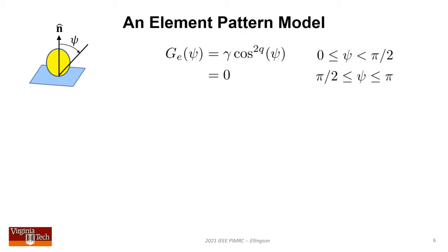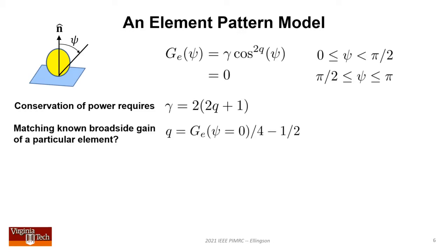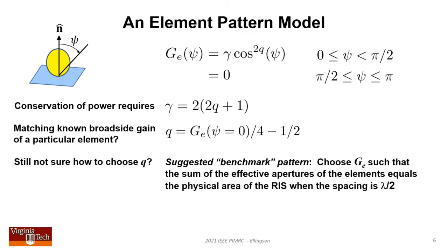Let me address the element pattern model. If you already have an element pattern, use it. If not, here's my suggestion. The cosine to a power function is well-established for low-gain elements like patches that would be used in a practical RIS. The relationship between gamma and q is constrained by conservation of power. If you select one, the other is determined. If you know only broadside gain, you can solve for q.